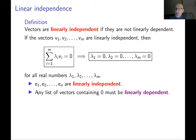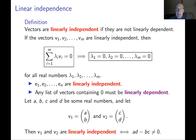Another important observation: if you have some list of vectors such that the list contains a zero vector, then these vectors are automatically linearly dependent. Because zero is a linear combination of any other vectors, this immediately gives you linear dependence if you look at the definition from the previous slide.